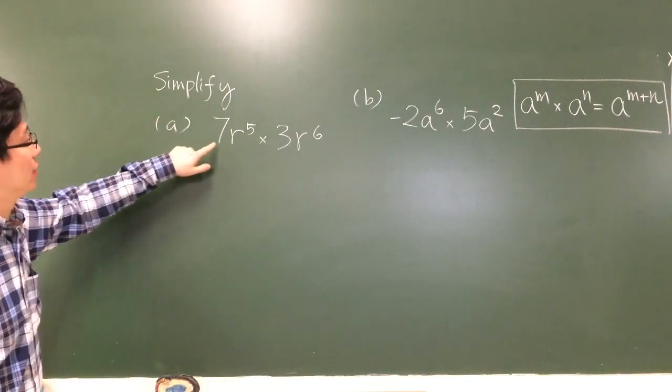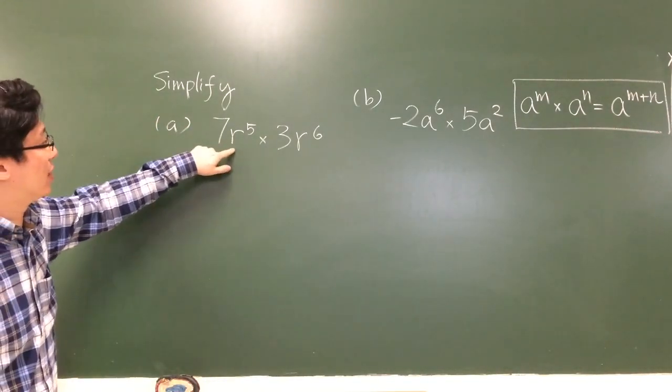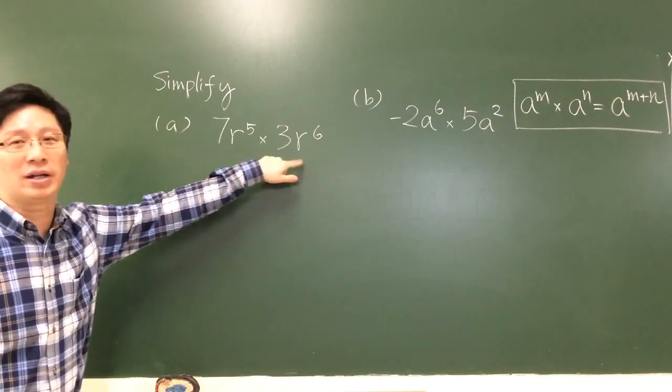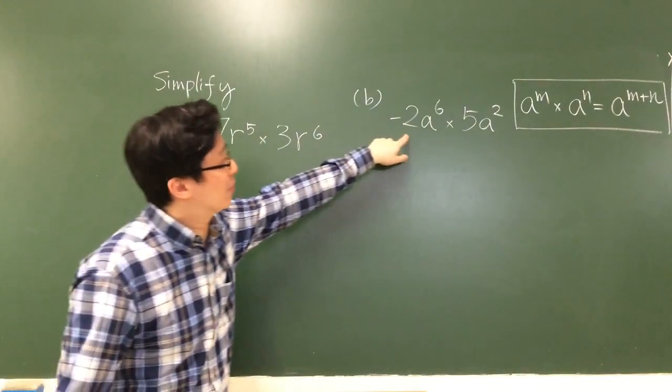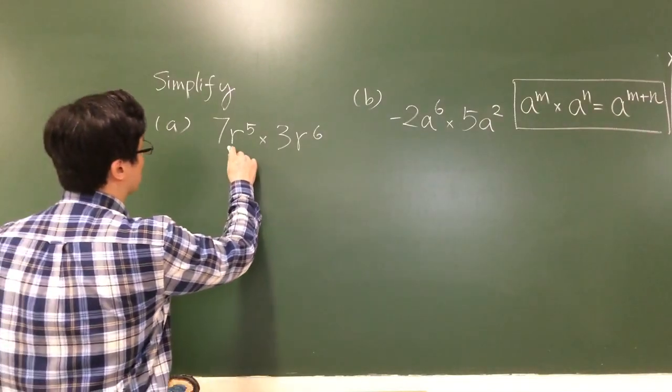Example, simplify this expression: 7r to the 5 times 3r to the 6. We have another part b, but let's look at part a first.